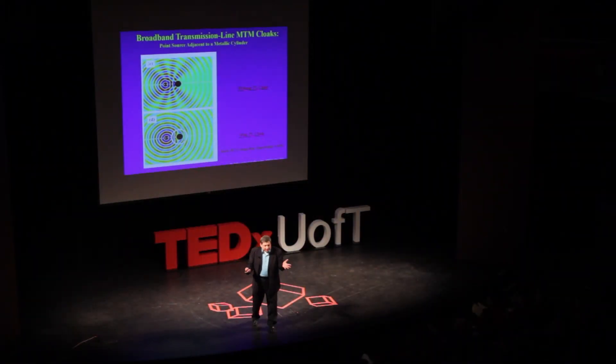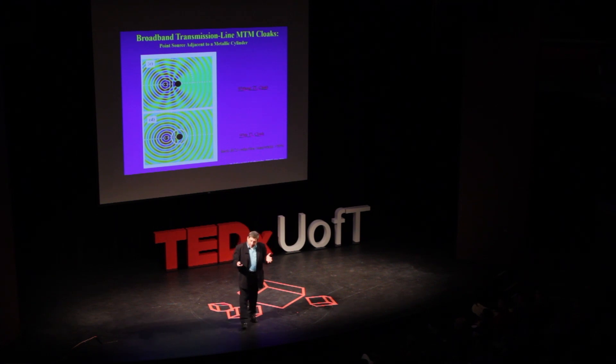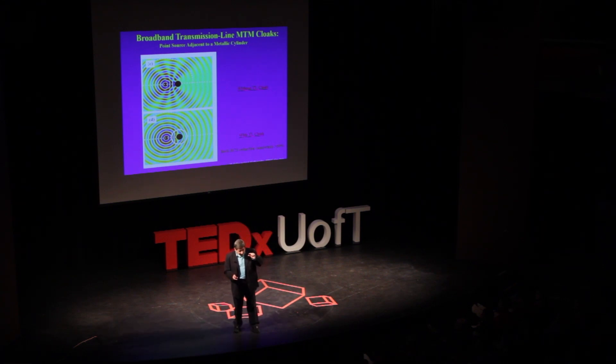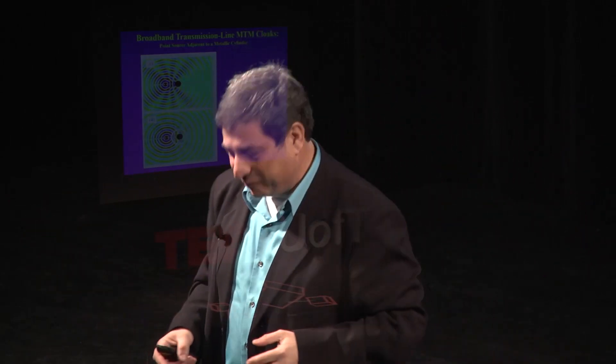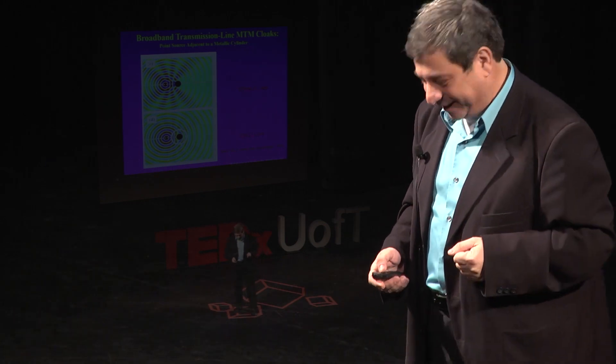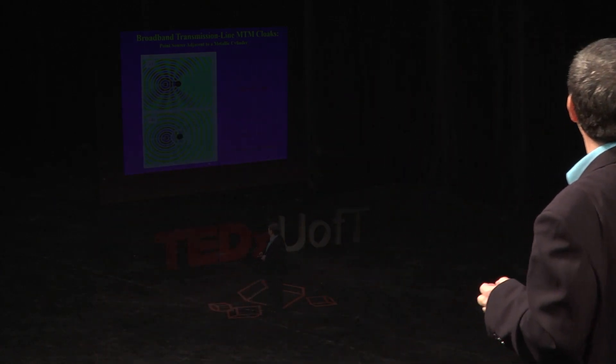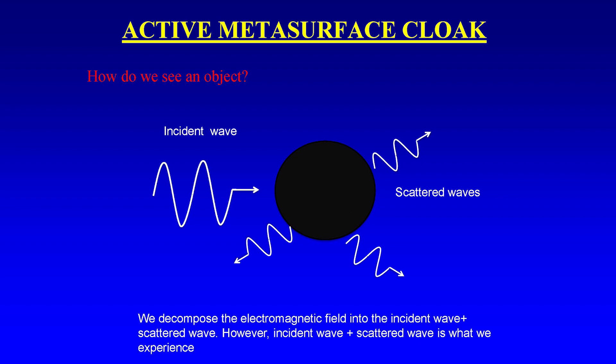This is the standard way of making invisibility cloaks developed over the past five years. However, there is a problem: the metamaterial cloak has to be quite thick, and it becomes thicker the larger the object you want to cloak. To solve this, we have experimented in my lab with another idea called active metasurface cloaking. Let's see how it works — I think it's quite simple to understand.